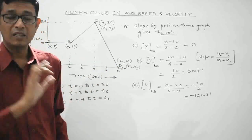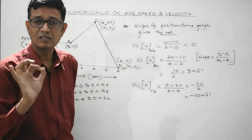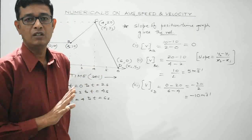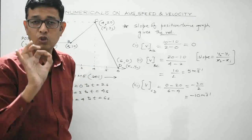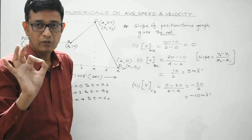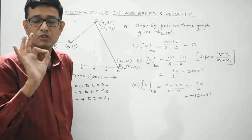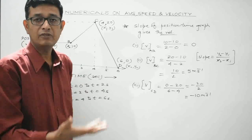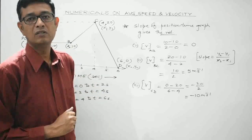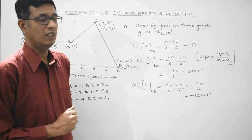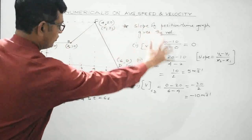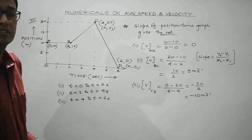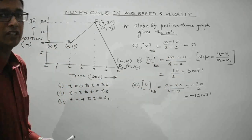The slope of the position-time graph gives the velocity of the body under consideration — that is the key takeaway from this graphical analysis.